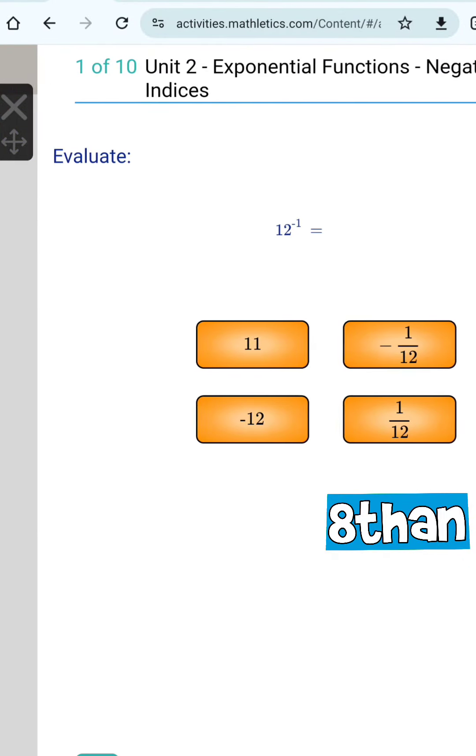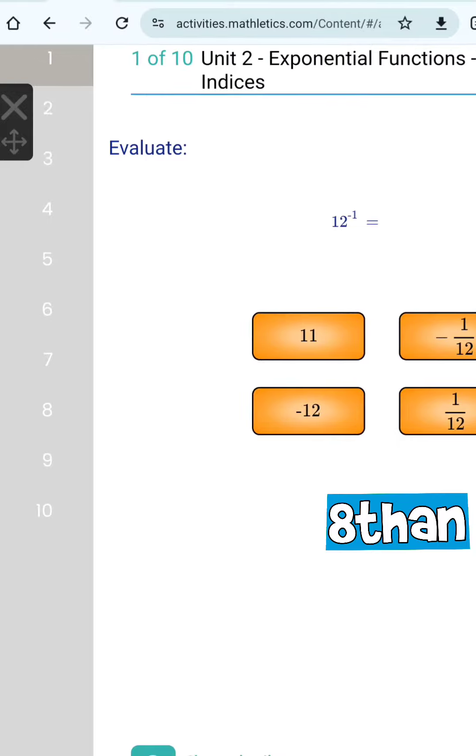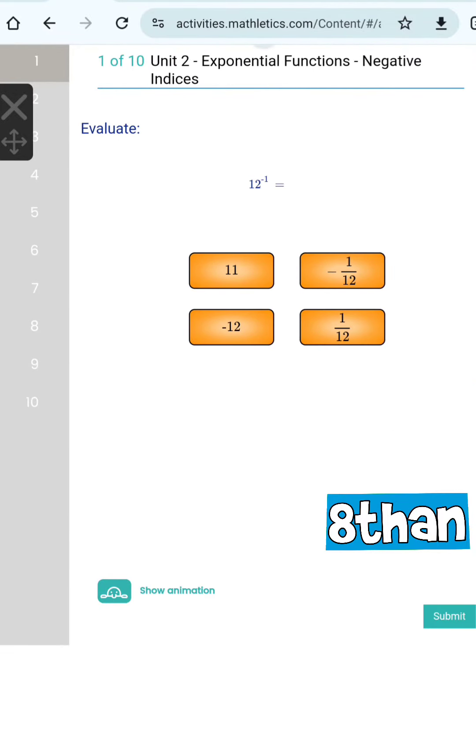So 12 to the negative first power is equal to 1 over 12 because 12 to the power of 1 is just 12, so 12 to the power of 0 is 1, and that also means that 12 to the power of negative 1 is just the reciprocal of 12.